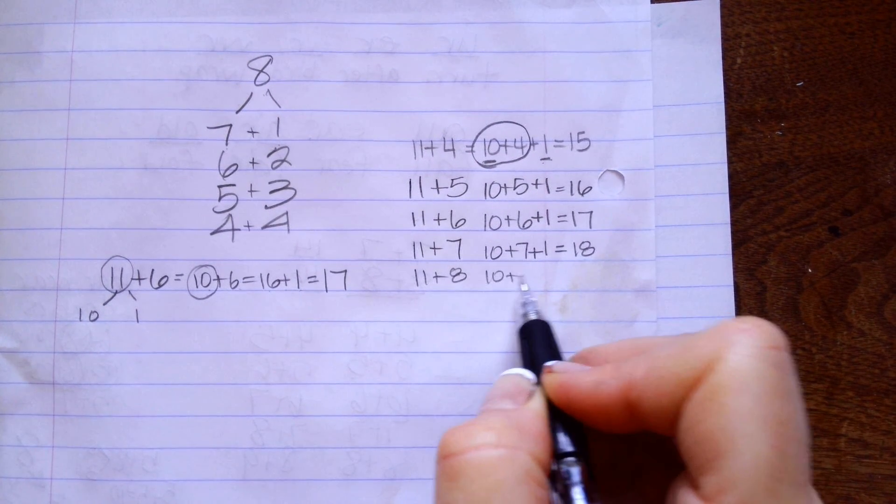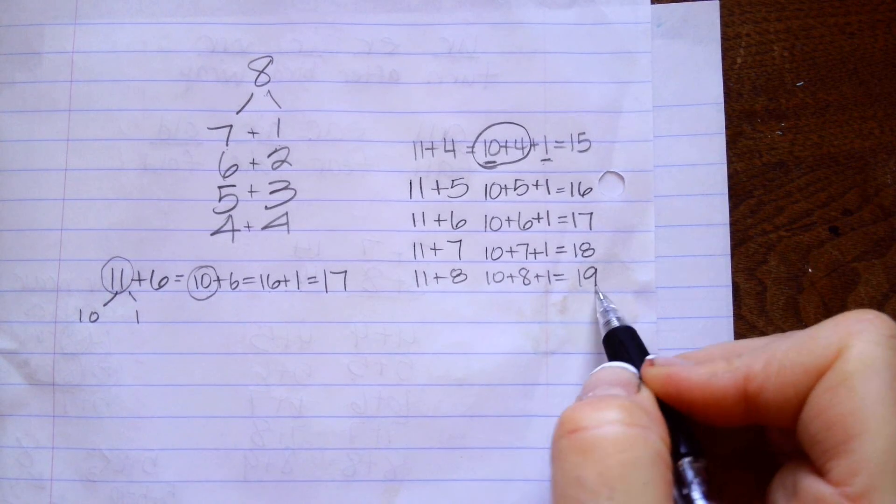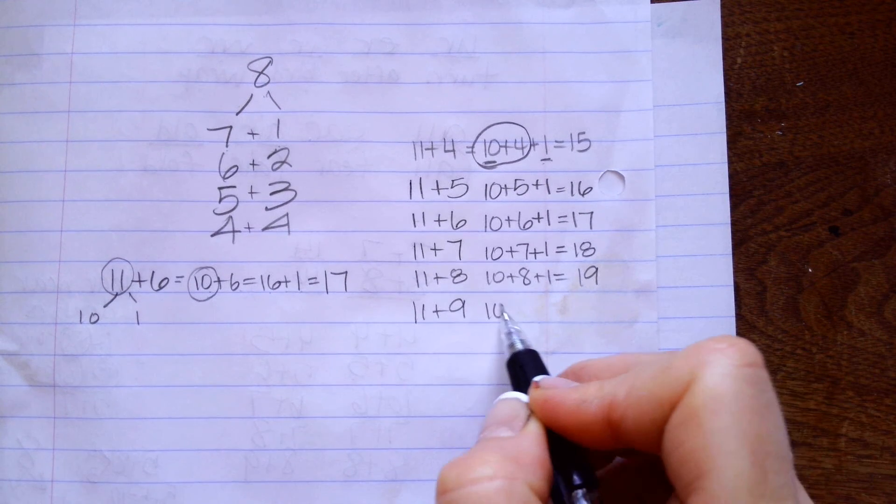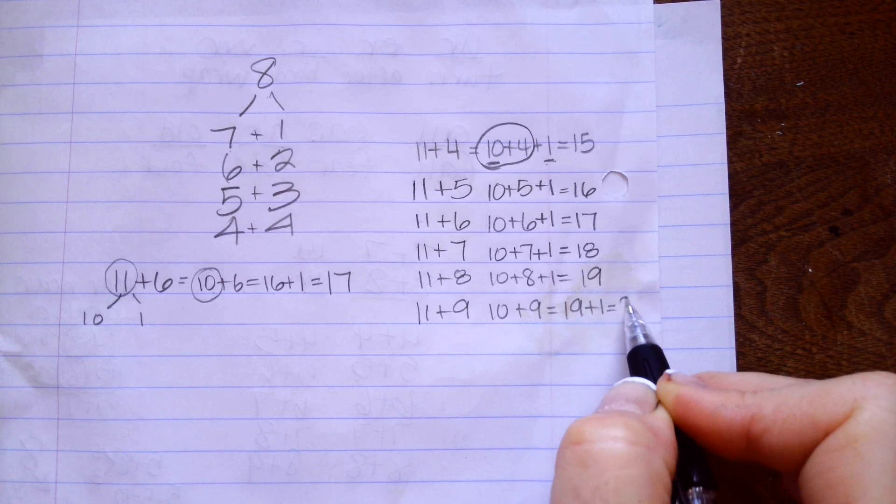I'm going to use 10 plus 8 is 18 plus 1 is 19. I'm going to do 11 plus 9, 10 plus 9 equals 19 plus 1 equals 20.